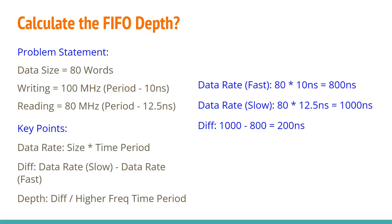Now we simply need to go ahead and see how many words is the transmitter capable of writing in this extra 200 nanoseconds that the receiver needs to read 80 words. And that should give us the depth. So our depth simply is 200 nanoseconds divided by 10 nanoseconds, which is 20. So the FIFO depth is 20.